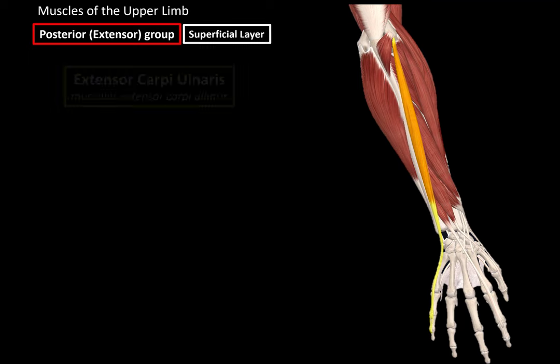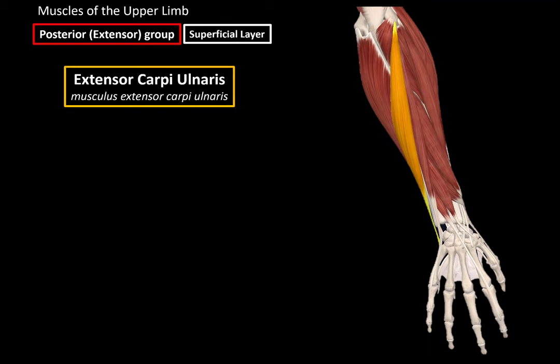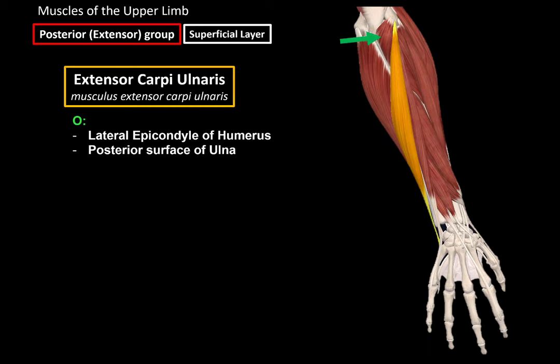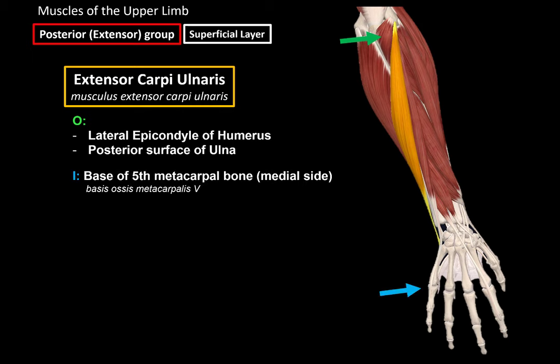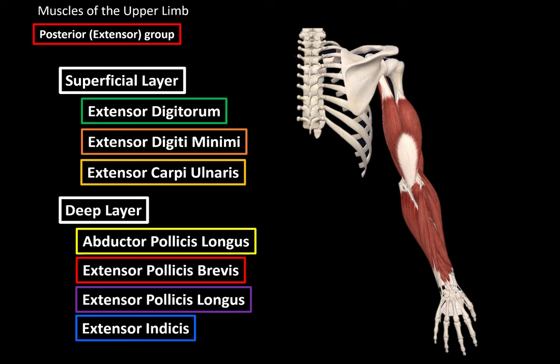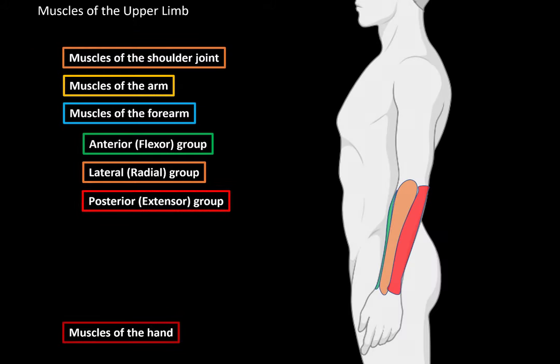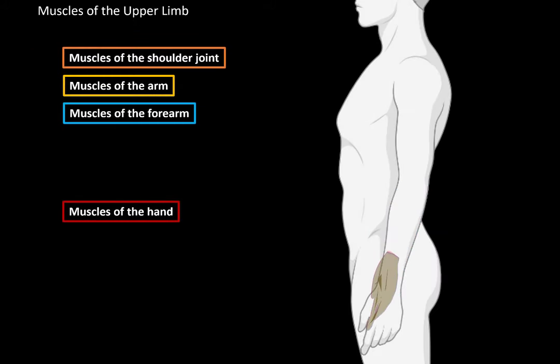Then we have the extensor carpi ulnaris. It originates from the lateral epicondyle of the humerus and the posterior surface of the ulna, and inserts at the base of the fifth metacarpal bone on the medial side. Its function is extension and adduction of the hand. That was all the muscles of the posterior group of the lower arm. Once you go through them a couple of times, they will get easier to visualize. In the next video, we will take a look at the muscles of the hand.